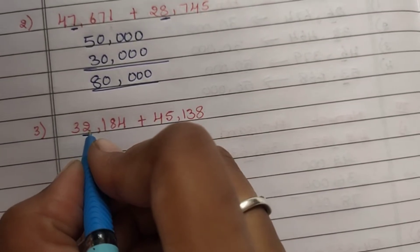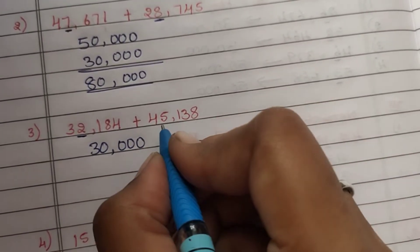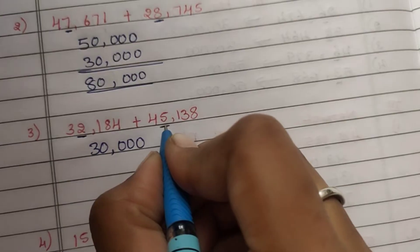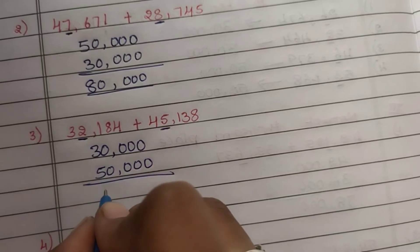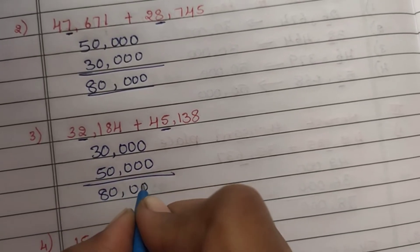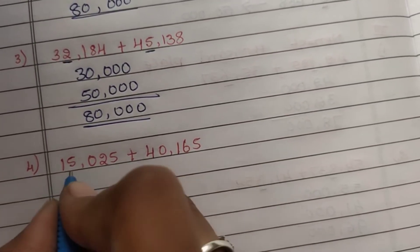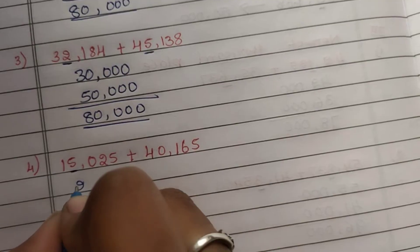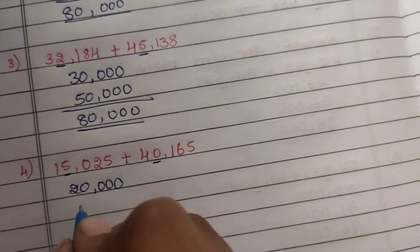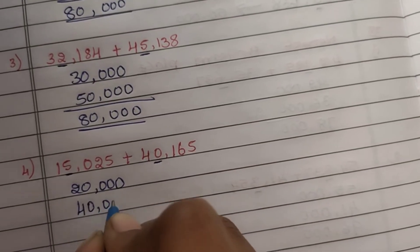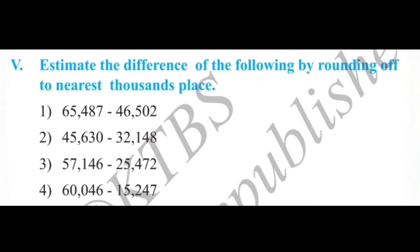Third question: 32,184. The digit 2 is less than 5, so we round down to 30,000. For 45,138, the digit 5 means we round up to 50,000. 3 plus 5 is 8, so 80,000. Next: 15,025 — digit 5, so 20,000. And 40,165 — digit 0, so 40,000. 2 plus 4 is 6, so 60,000.